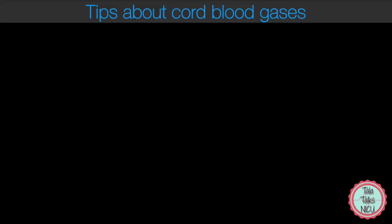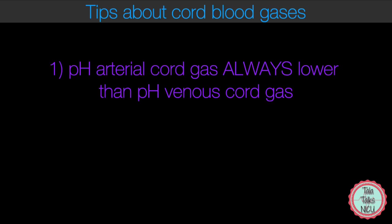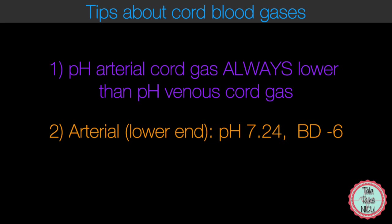Since you're obviously not going to go back and watch the previous video, I'm going to sum up three important points. The pH of the arterial cord gas is lower than the venous cord gas, so the arterial is more acidotic than the venous always. The lower normal end of an arterial pH is 7.24 with a base of minus 6. For the venous pH, the lower normal end is 7.32 with a base of minus 4.